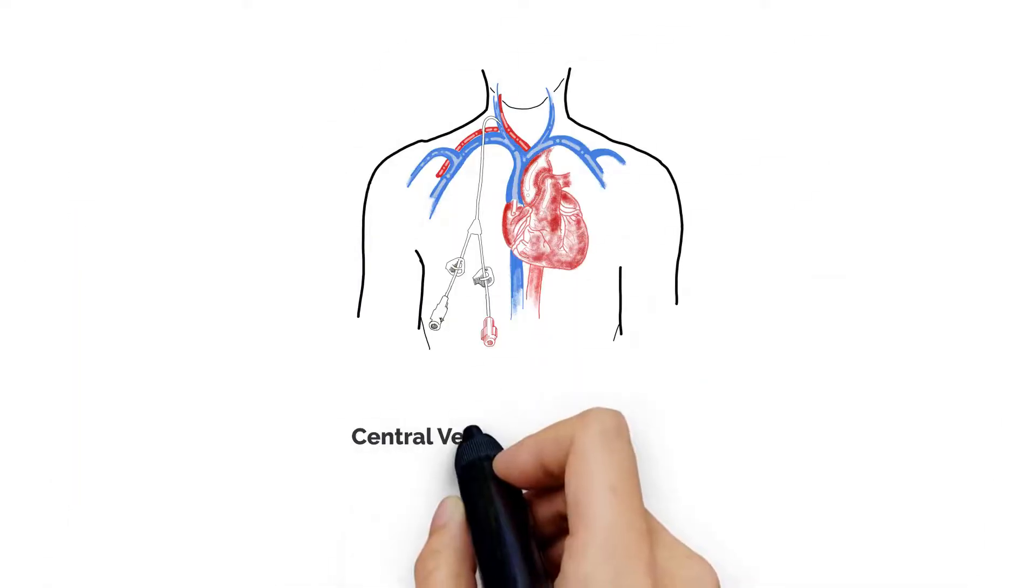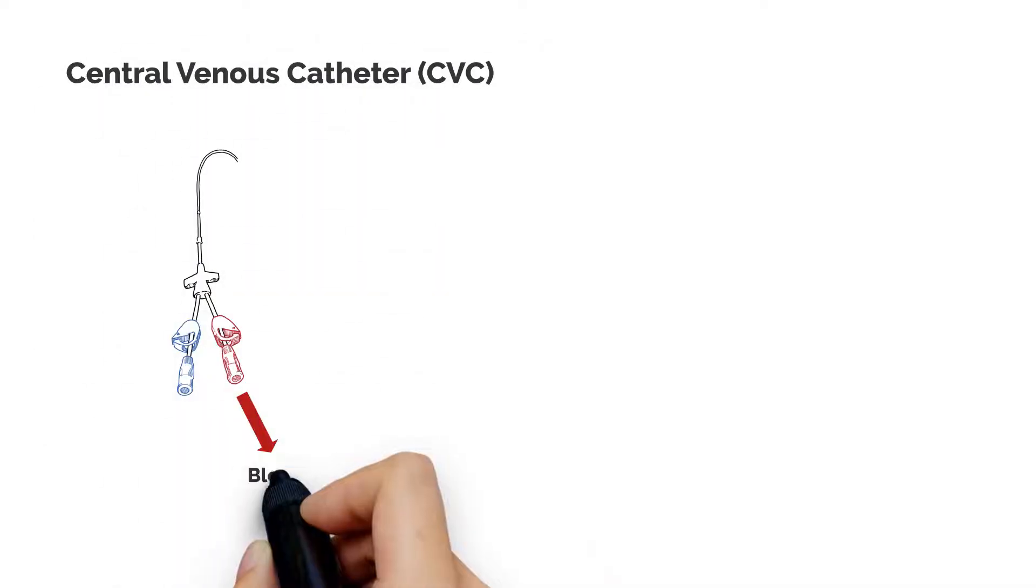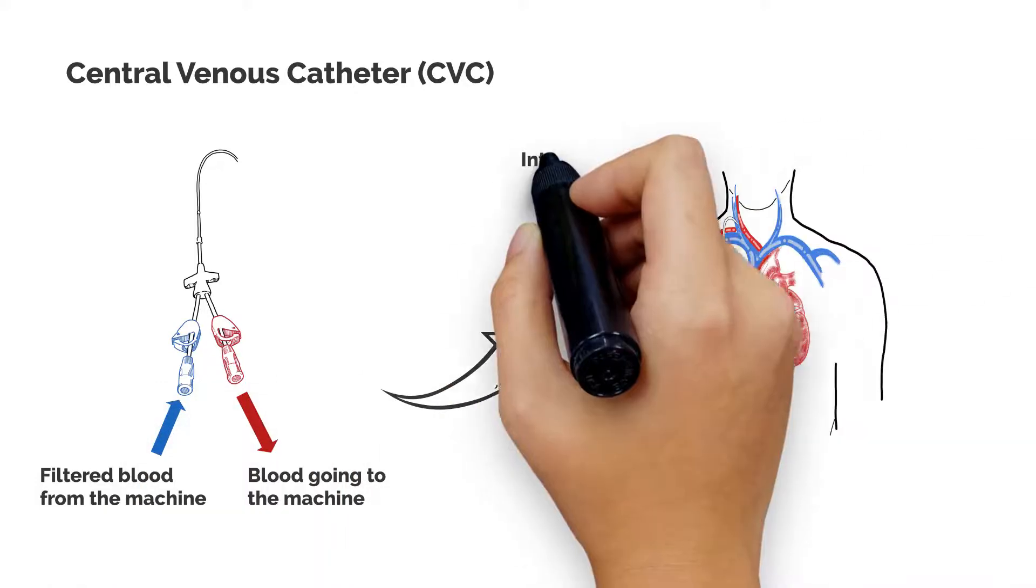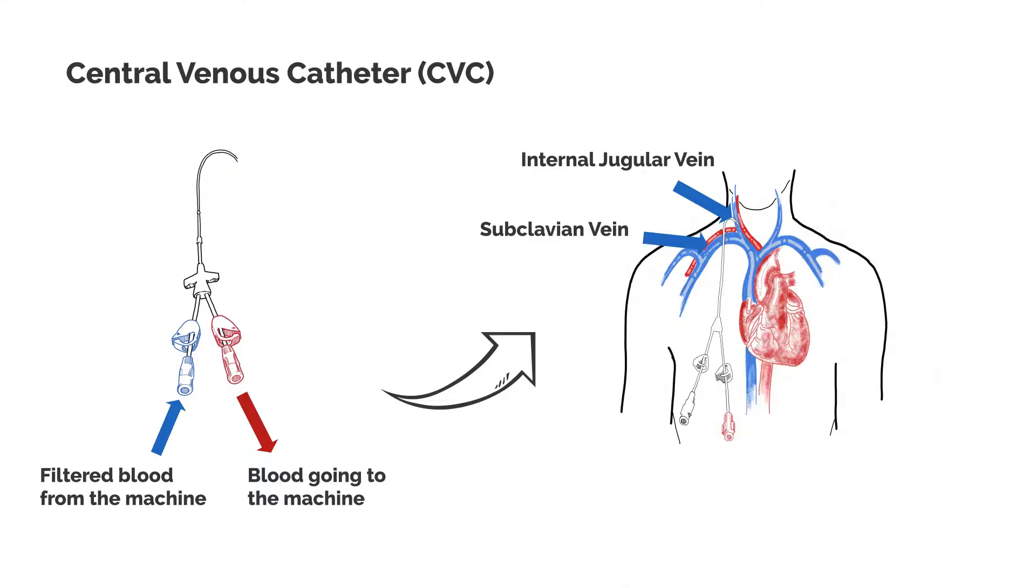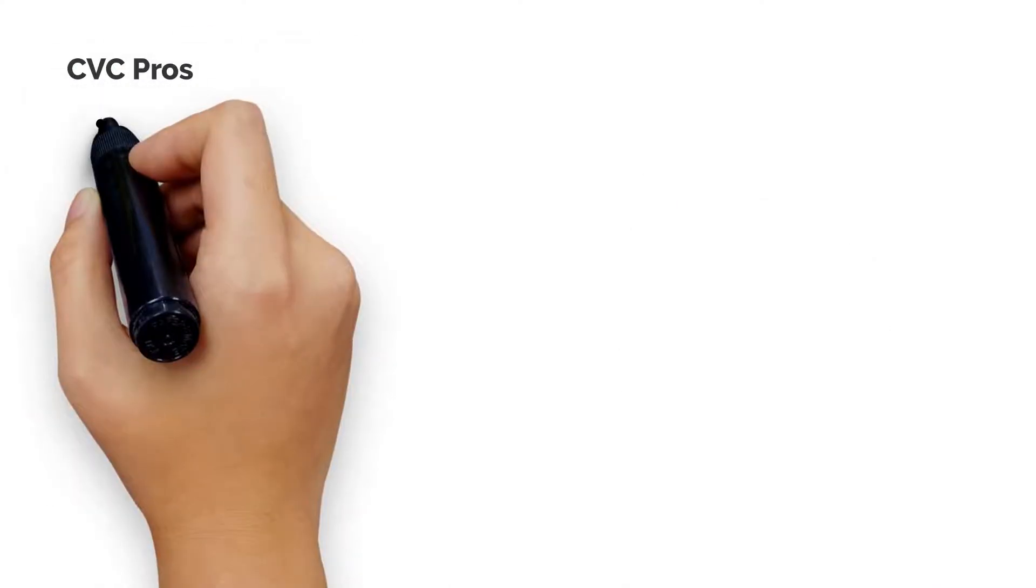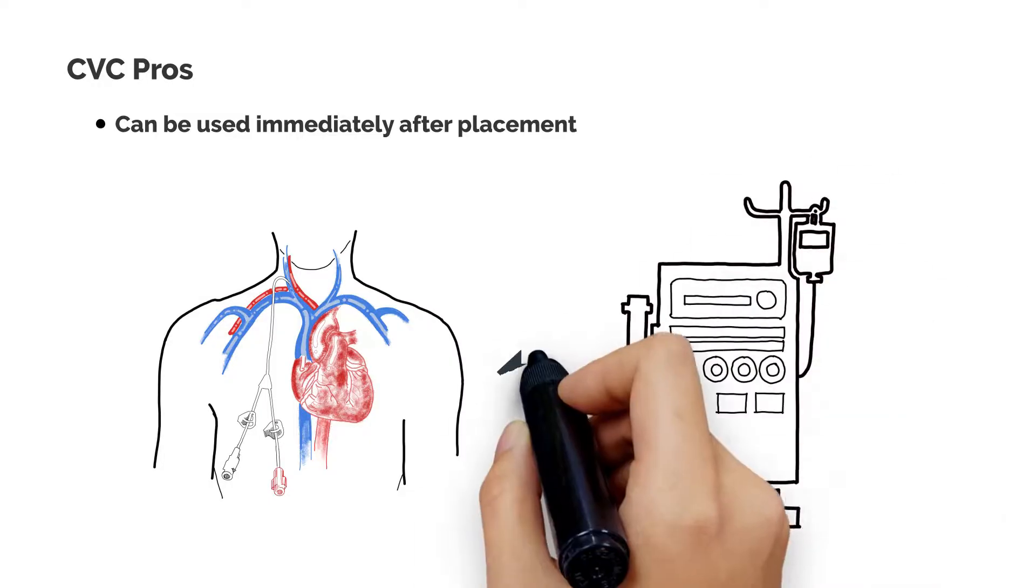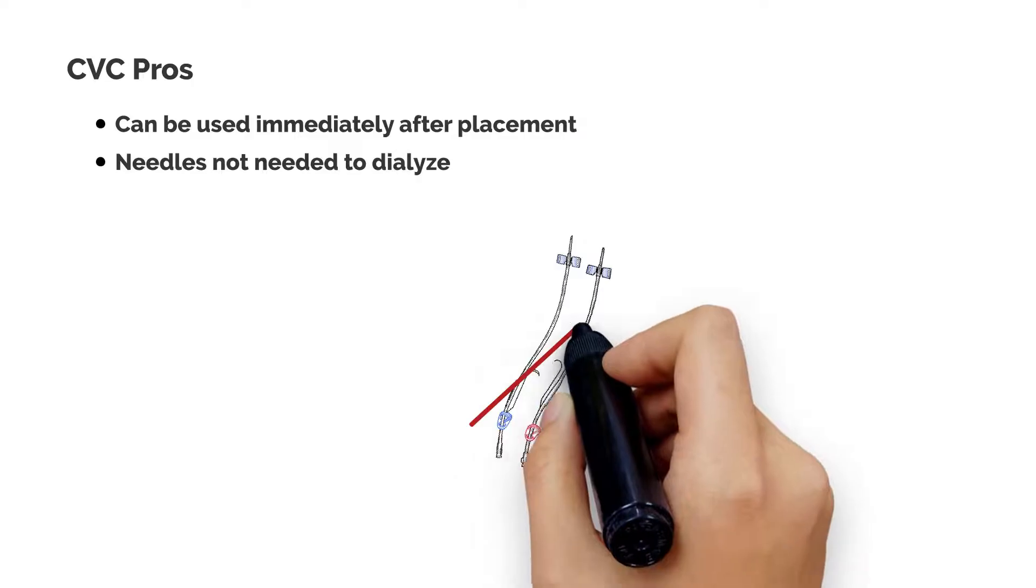The third type is the central venous catheter or CVC. A CVC is a thin, flexible tube placed into a large vein, often in the neck or chest near the heart. A CVC can be used immediately after placement, making it convenient in urgent situations, and no needles are needed to dialyze.